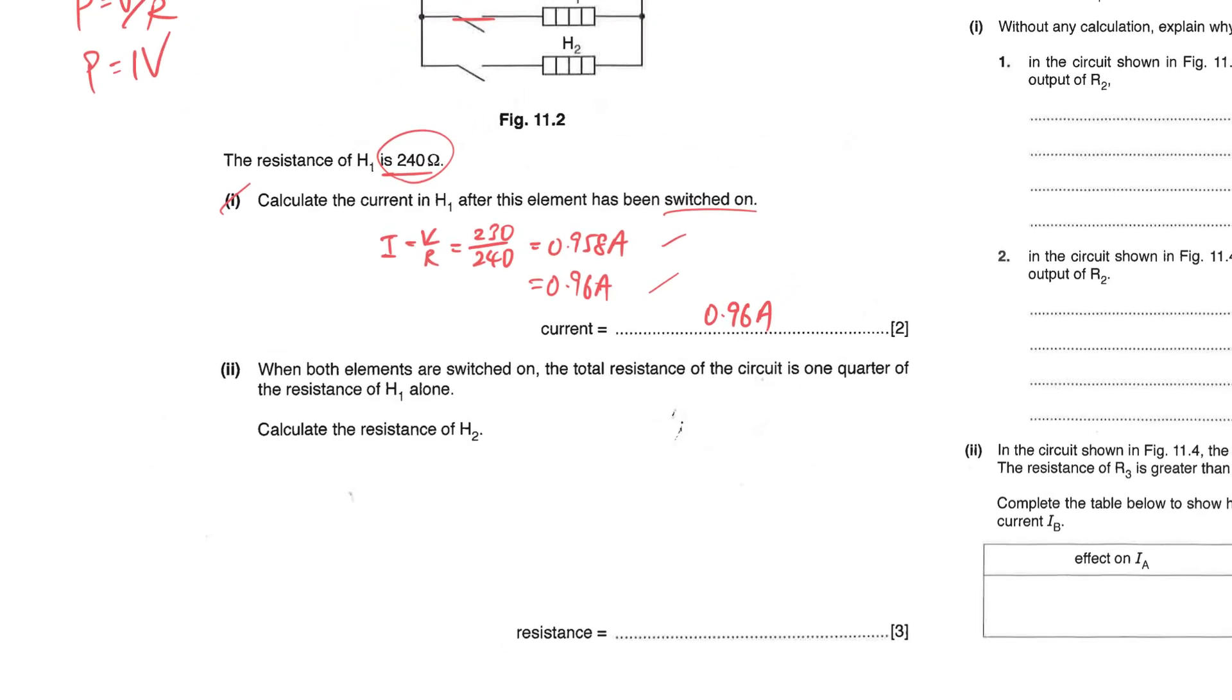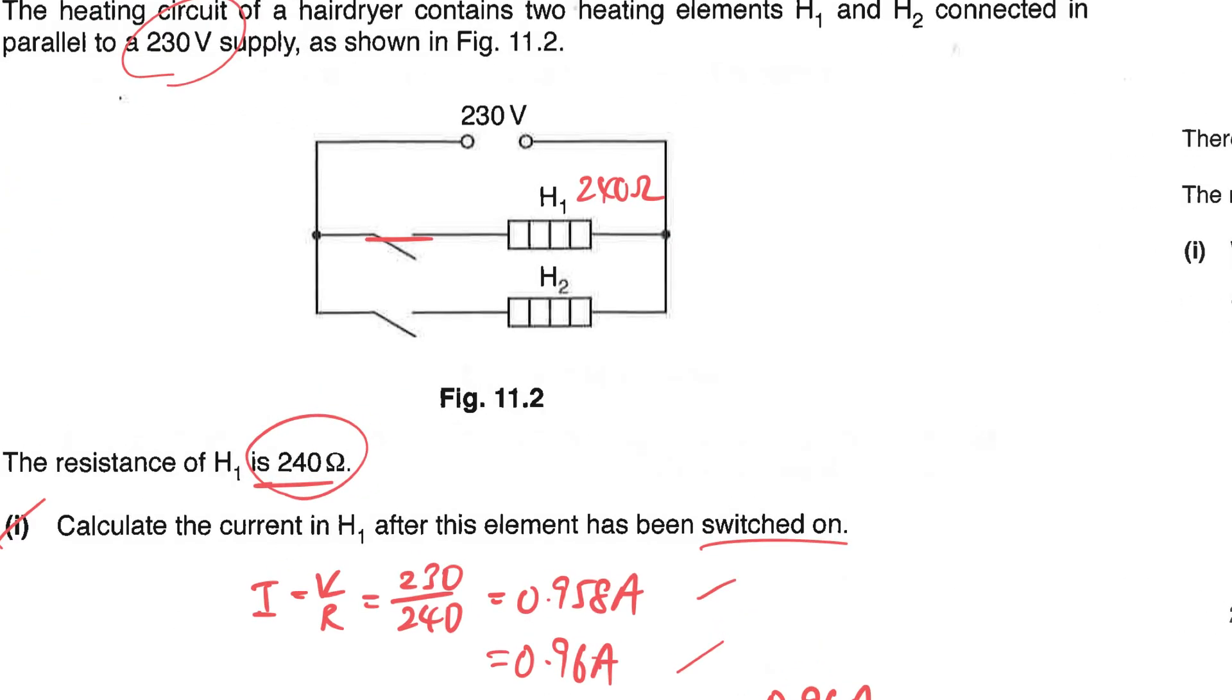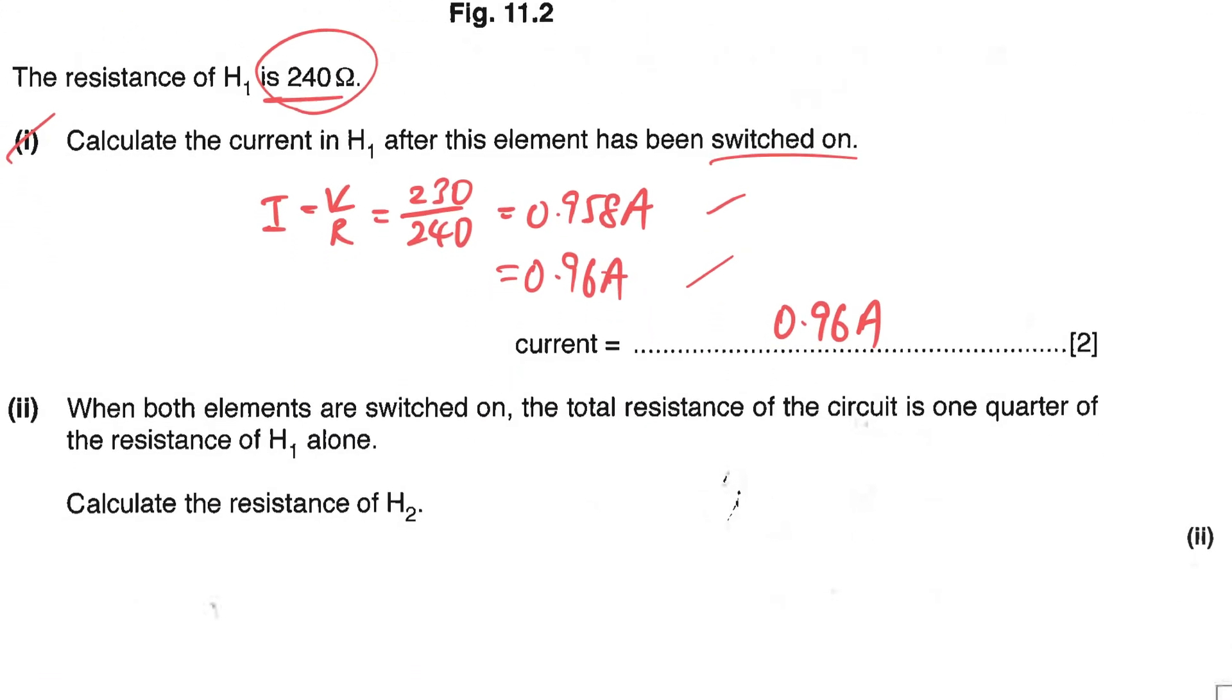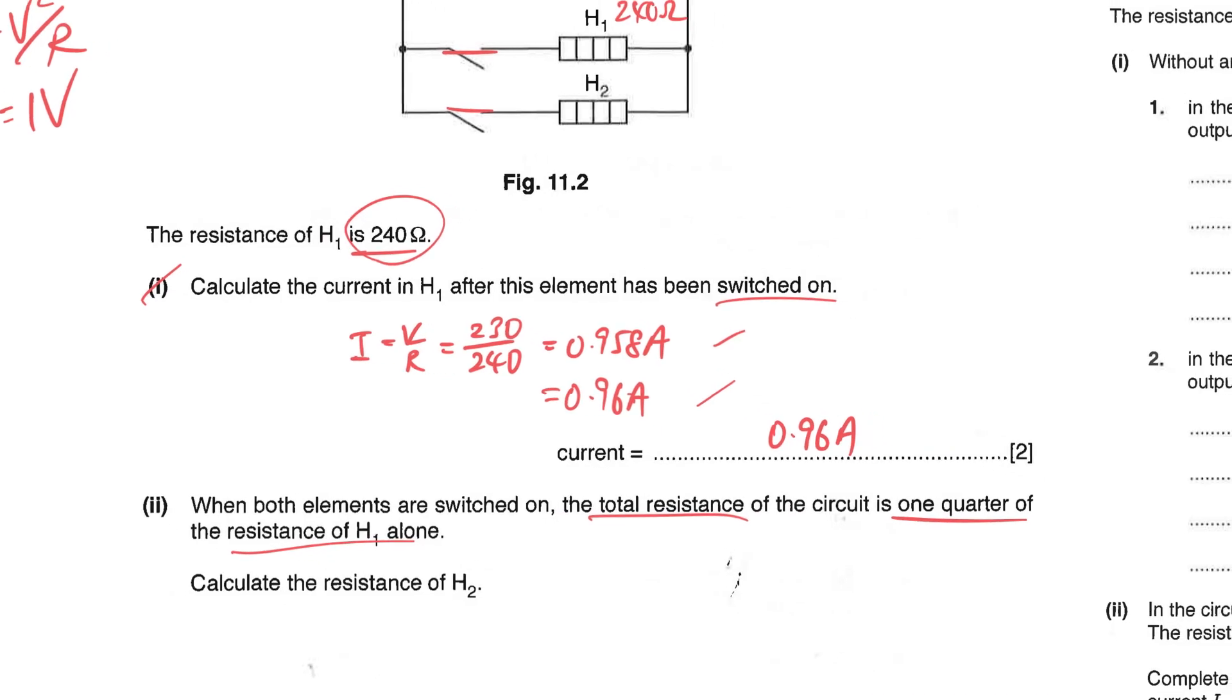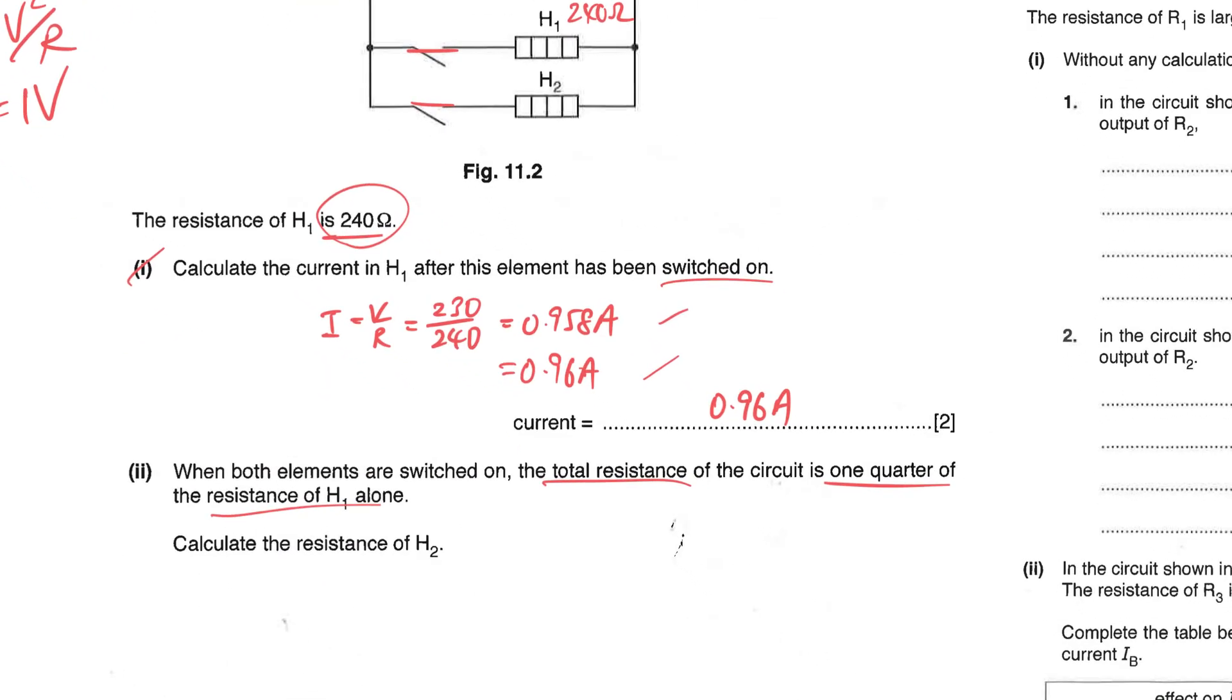The next part here: when both the elements are switched on, that means both are switched on here H1 and H2. The total resistance, the total effective resistance, is one quarter that of H1 alone. So if that's the case, let's find the total effective resistance which is one quarter of H1, 240 ohms, so you will have 60 ohms.